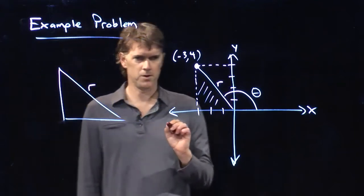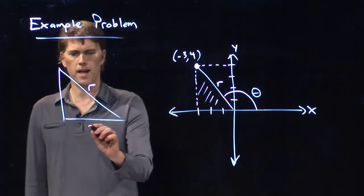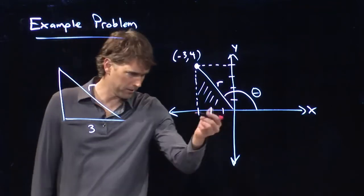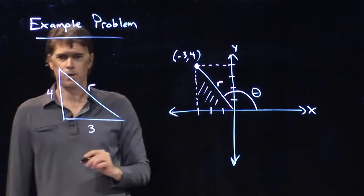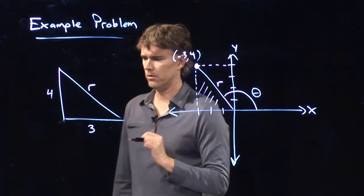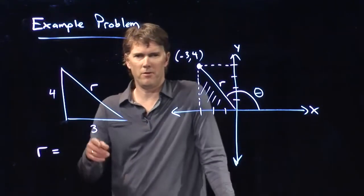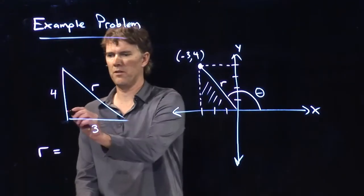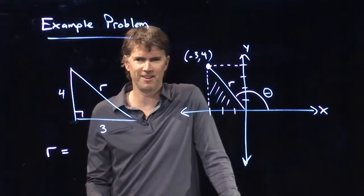The hypotenuse of the triangle is r. The bottom of the triangle has a magnitude of 3. We know it's negative, but it has a magnitude of 3. And we know that the vertical side is 4. So what does r have to be equal to? Anybody heard of a right triangle that starts with a 3 and then goes to a 4? What's the third side equal to?